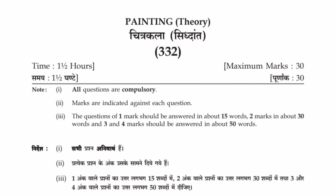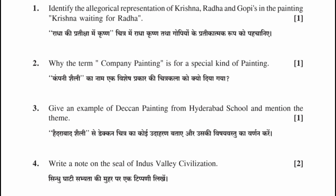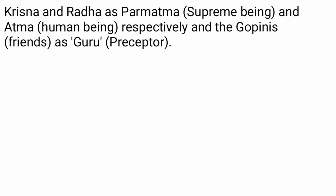Question 1: Identify the allegorical representation of Krishna, Radha and Gopis in the painting 'Krishna Waiting for Radha'. Krishna and Radha represent Paramatma and Atma respectively, and the Gopis represent the Guru.